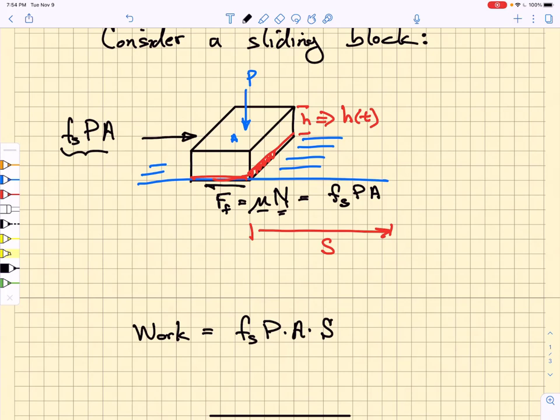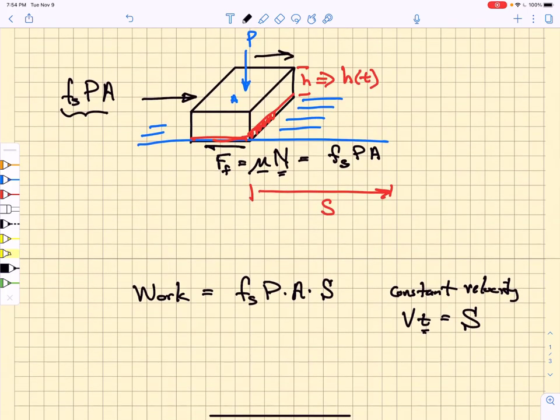Now if this is sliding at a constant velocity, let's give this a velocity vector v, then our displacement is just going to be equal to v times t, the time over which we have that constant velocity. And the work is just going to be equal to the sliding coefficient of friction times the pressure times the area times v times t.